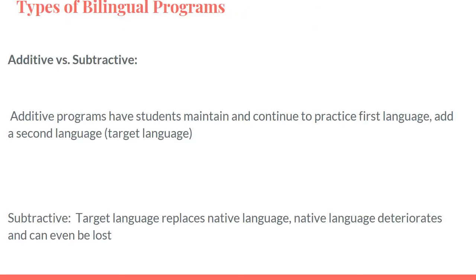Let's quickly review concepts discussed in prior classes. Bilingual education is broken up into two different types of programs: additive versus subtractive bilingual programs. Additive programs have students maintain and continue to practice their first language, with the idea that students will become proficient in that first language and also add a second language — the target language. In general, the target language is the majority language of the country they live in.